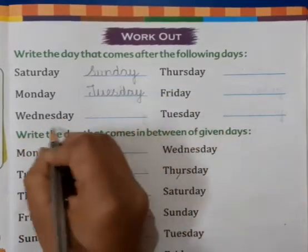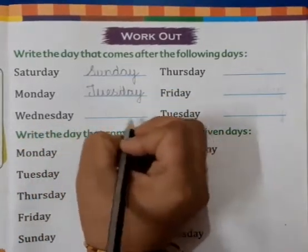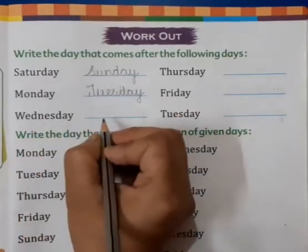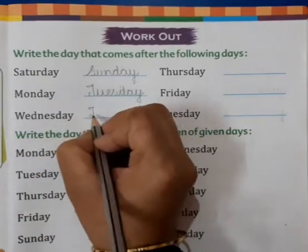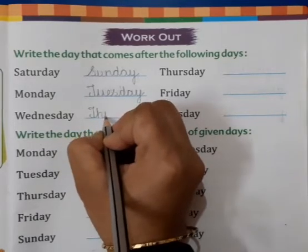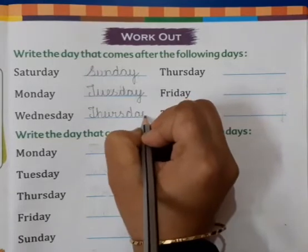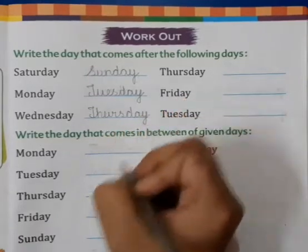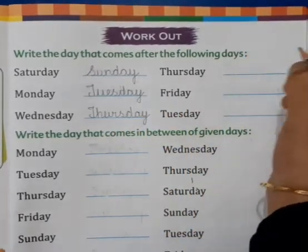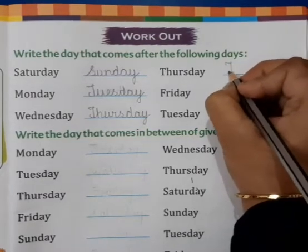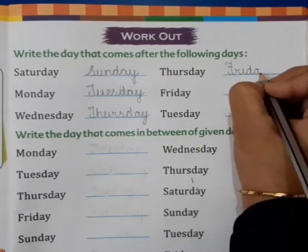Now Wednesday — so we will write Thursday, because Wednesday ke baad Thursday aata hai. T-H-U-R-S-D-A-Y, Thursday. Now Thursday ke just after aata hai Friday. F-R-I-D-A-Y, Friday.